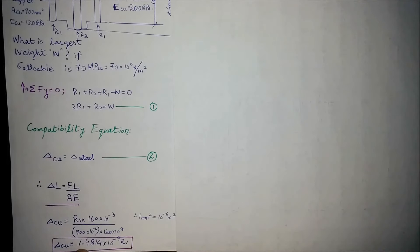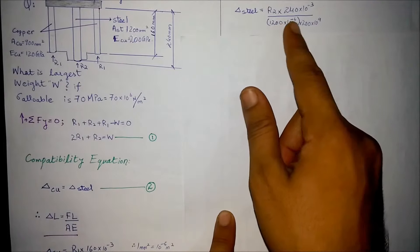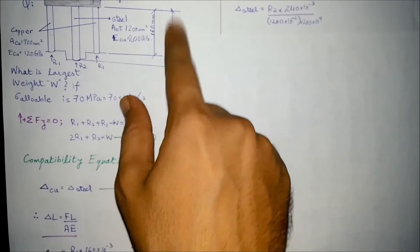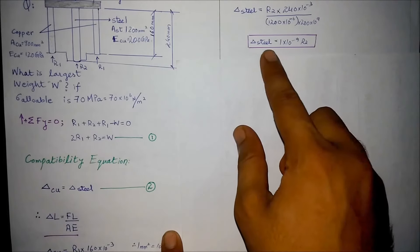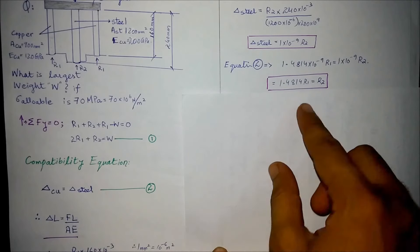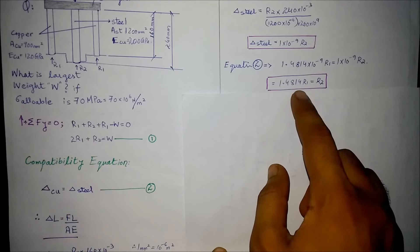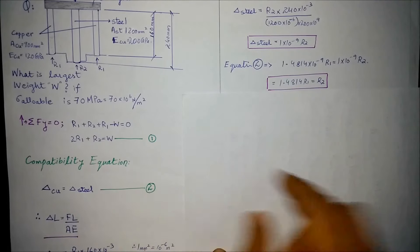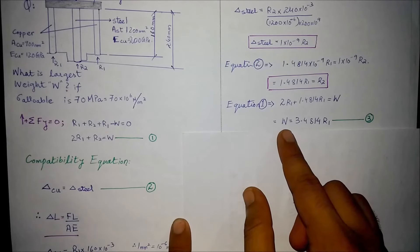Similarly for steel it would be R2 times 240, the length of steel, over area of steel into modulus of elasticity of steel. The change in length of steel comes out in terms of R2. Now we apply the compatibility equation, equation number two, which gives us the value of R2 in terms of R1. Substituting this value in equation number one gives us the value of weight in terms of reaction R1.